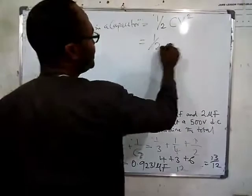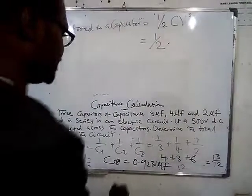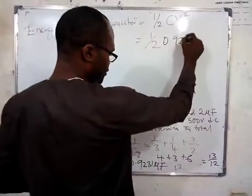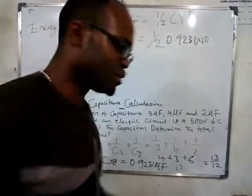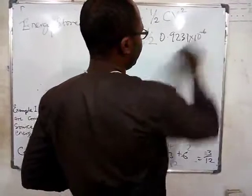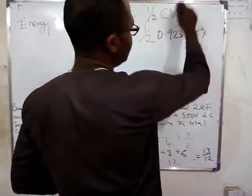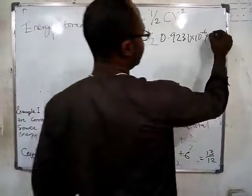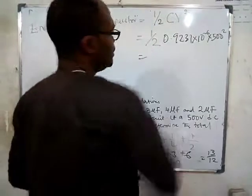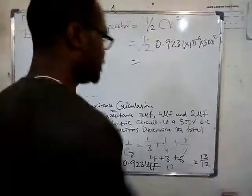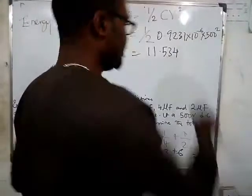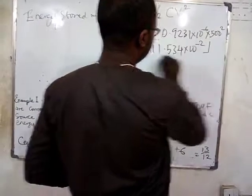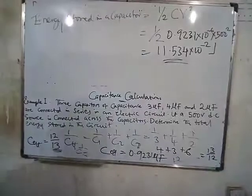So energy equals half × C × V². C is the effective capacitance, 0.9231 microfarad, which when converted to farads is 0.9231 × 10^-6 F. V is 500 V, so V² = 500². Solving this gives 1.1534 × 10^-1 joules — press this out on your calculator to confirm.